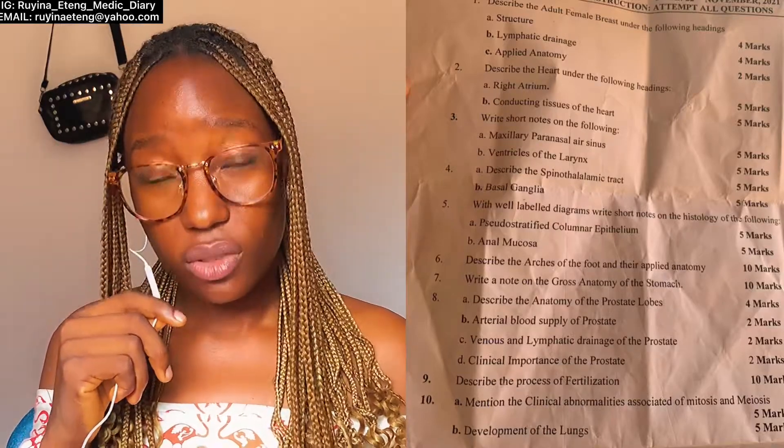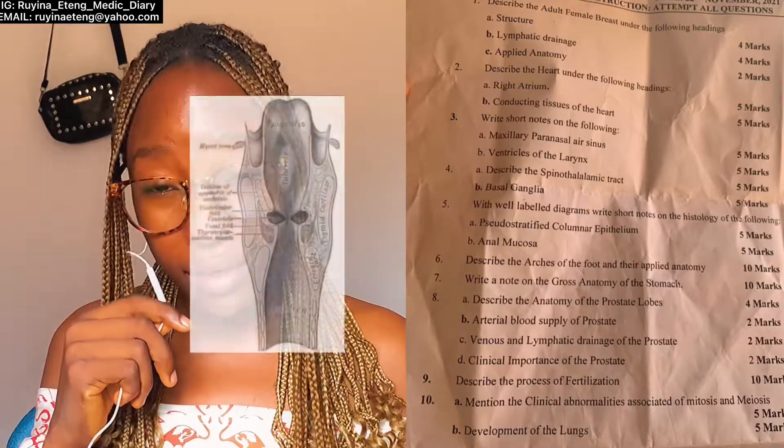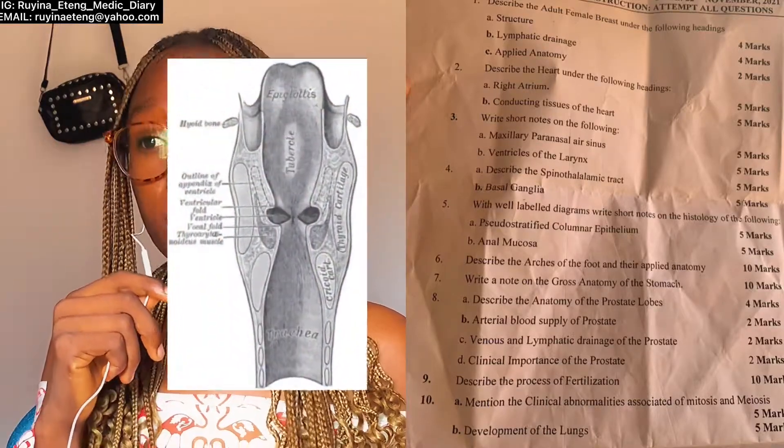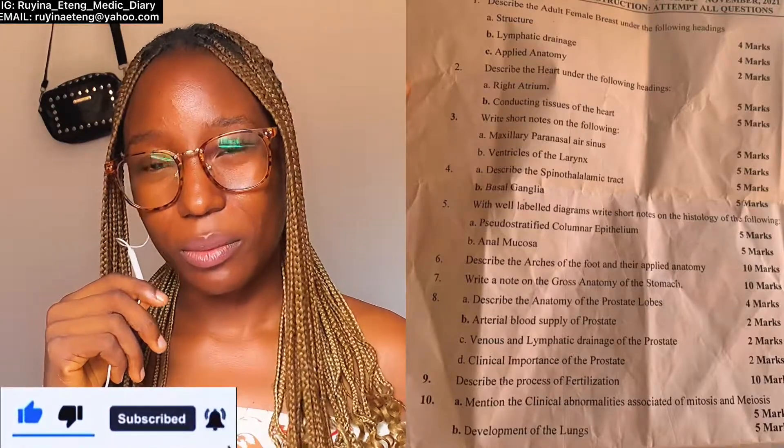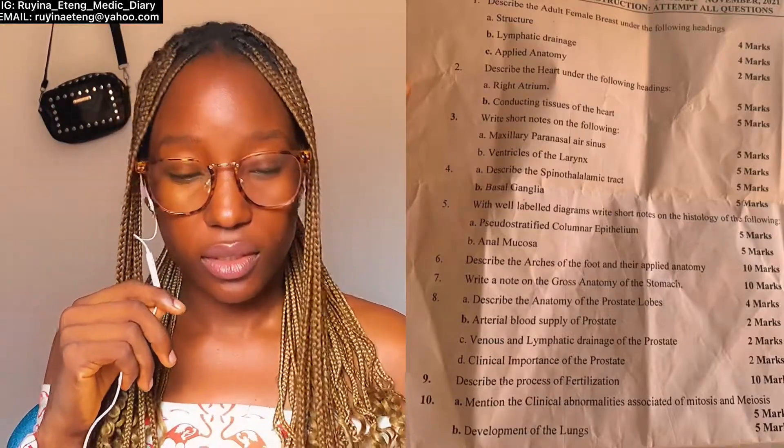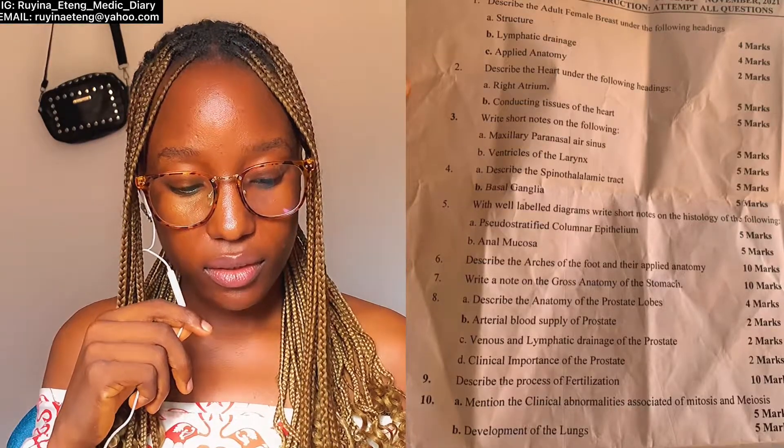Moving on to ventricles of the larynx: write your introduction and draw the diagram. Remember, the ventricles of the larynx are essentially a space, so there's no need for blood supply, innervation, and all of that. Just put the borders, the relations, and the clinical anatomy and you're good to go.